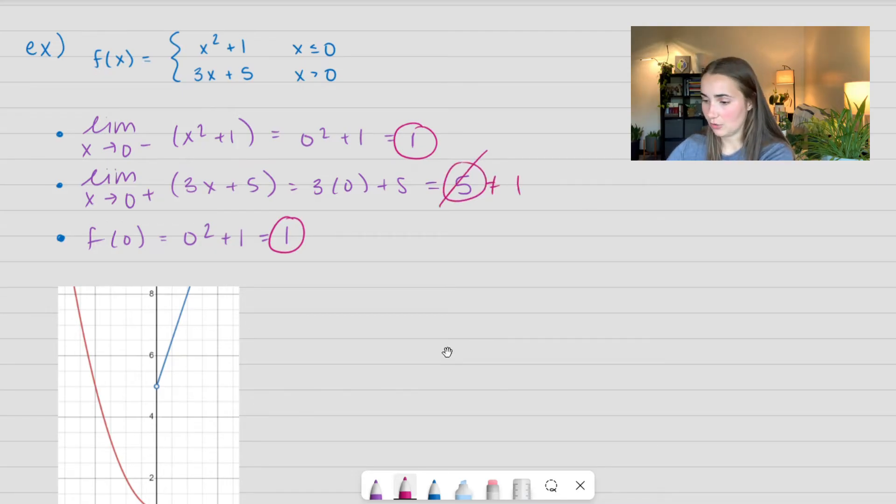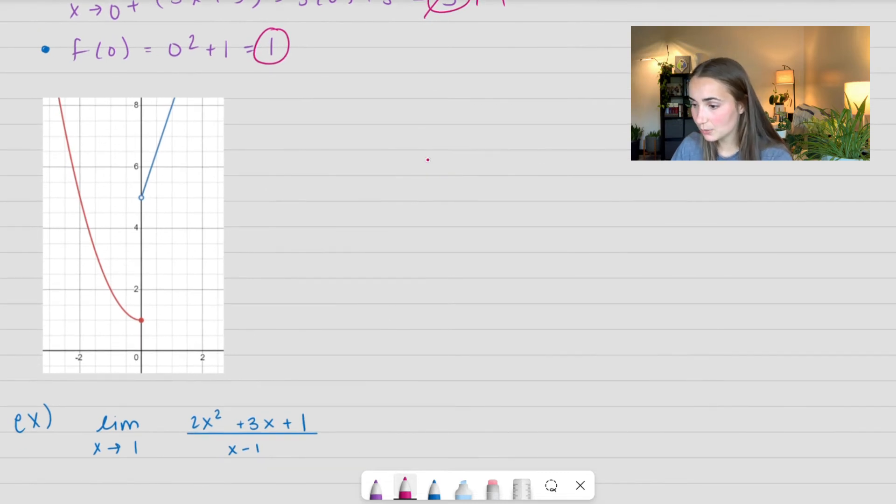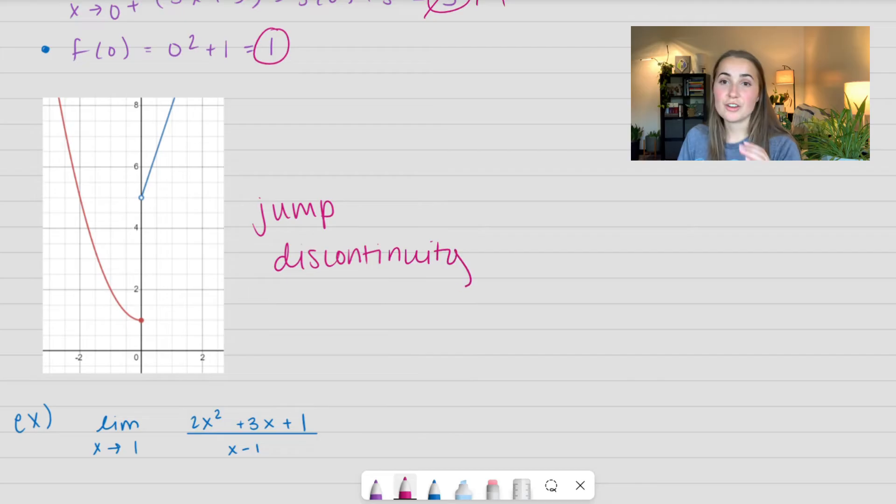Let's go ahead and see what this looks like in the graph. This is actually what we call a jump discontinuity because our function jumps from a value of 1 all the way up to a value of 5. It's like your pencil jumps up. So this is another type of discontinuity. Let's see another example.